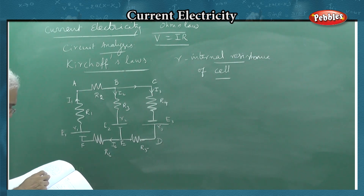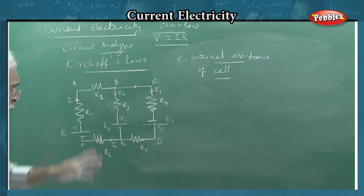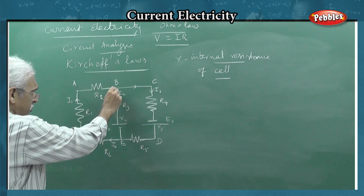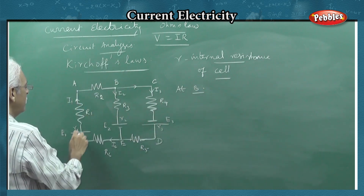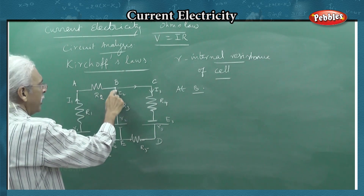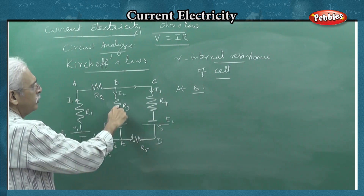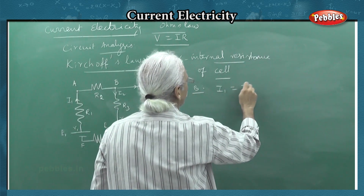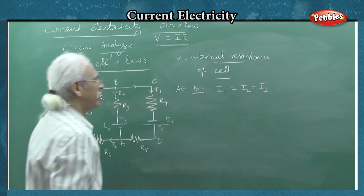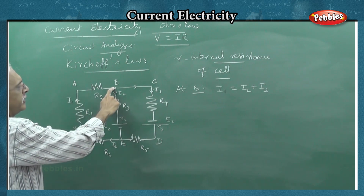This is the demonstration of Kirchhoff's Law. First, the current law — the junction rule. I have a diagram. At Junction B: I1 is entering, I2 is leaving, I3 is also leaving. By the junction law, I1 is equal to I2 plus I3. At Junction B, current entering is equal to current leaving.